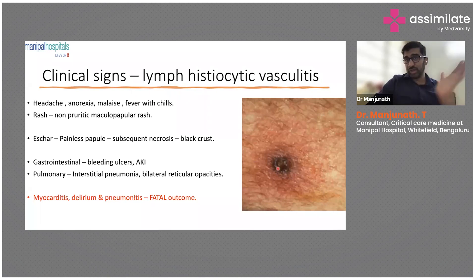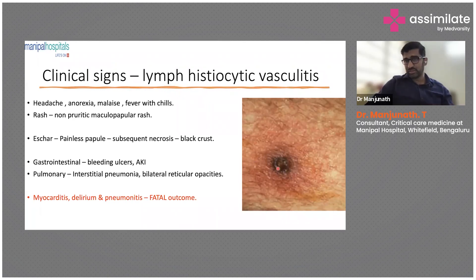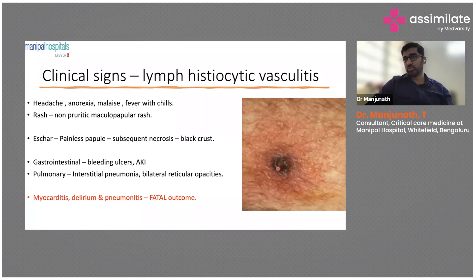Examine all crevices — the axilla, perineal areas, knee joints, back, especially the neck and shoulder areas — because these clinical signs actually help diagnose tropical infections when laboratory tests are so difficult. If you find an eschar, it is essentially pathognomonic.